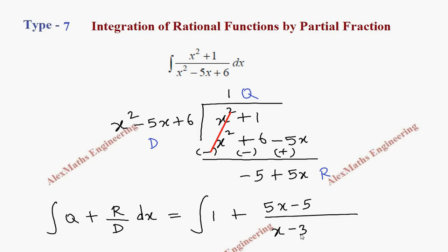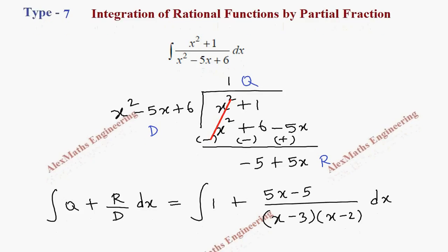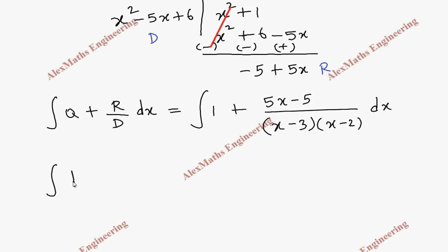Divisor we can write in two factors: (x - 3)(x - 2). Now this integration is split into two parts. First part is integral dx, second part is (5x - 5) divided by (x - 3)(x - 2) dx.